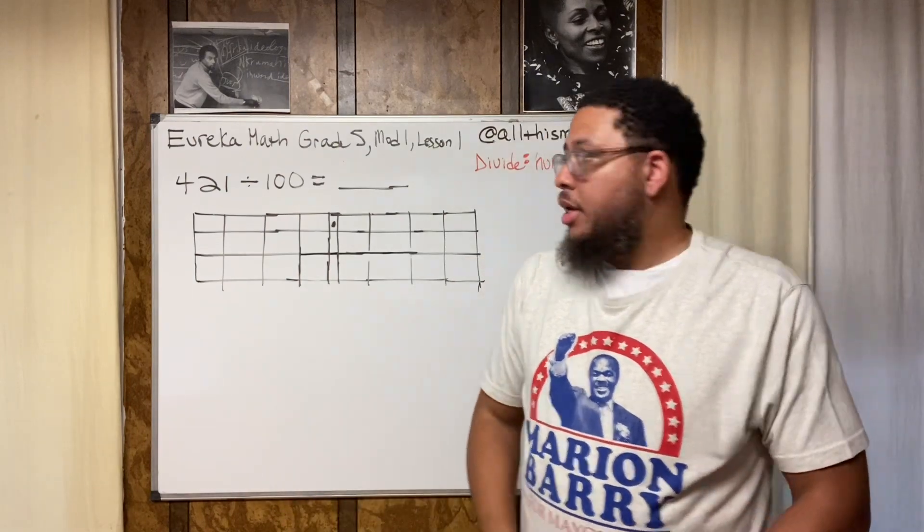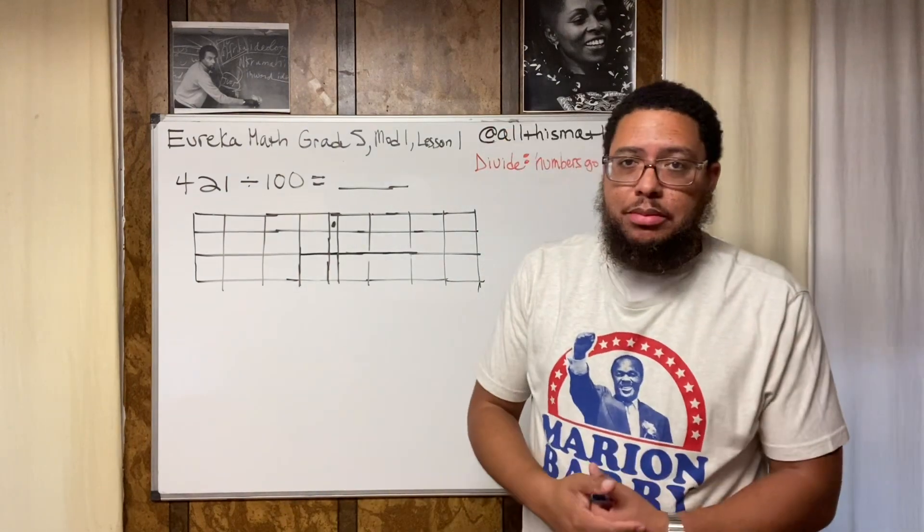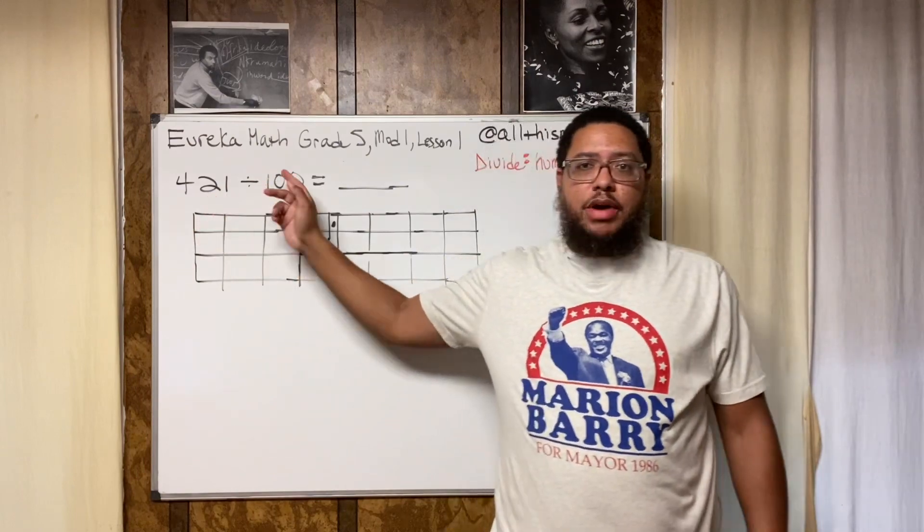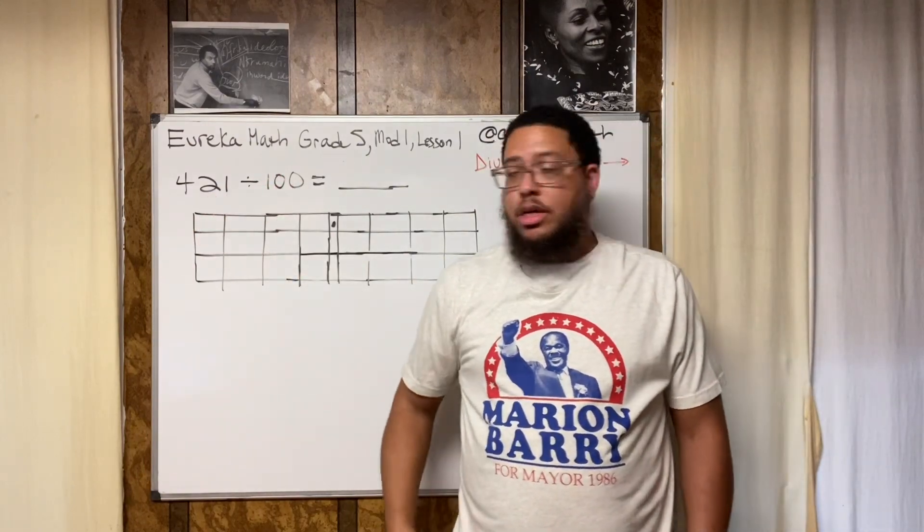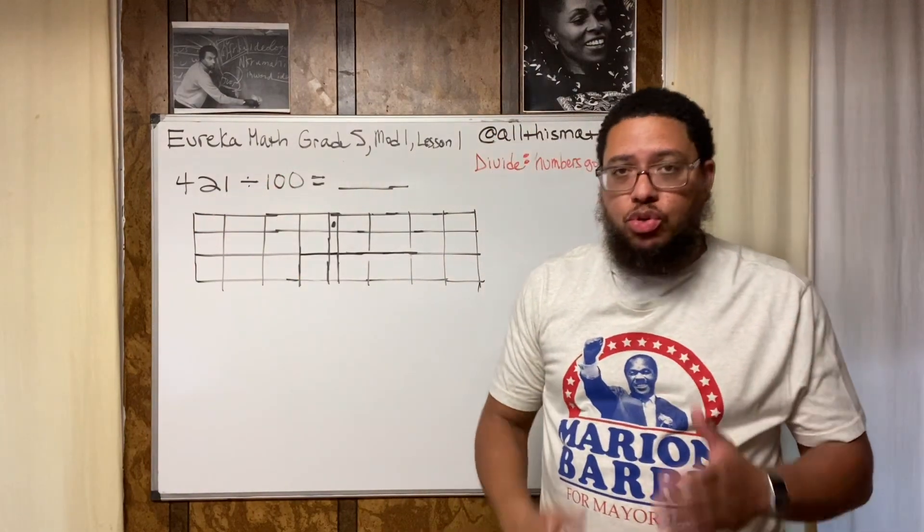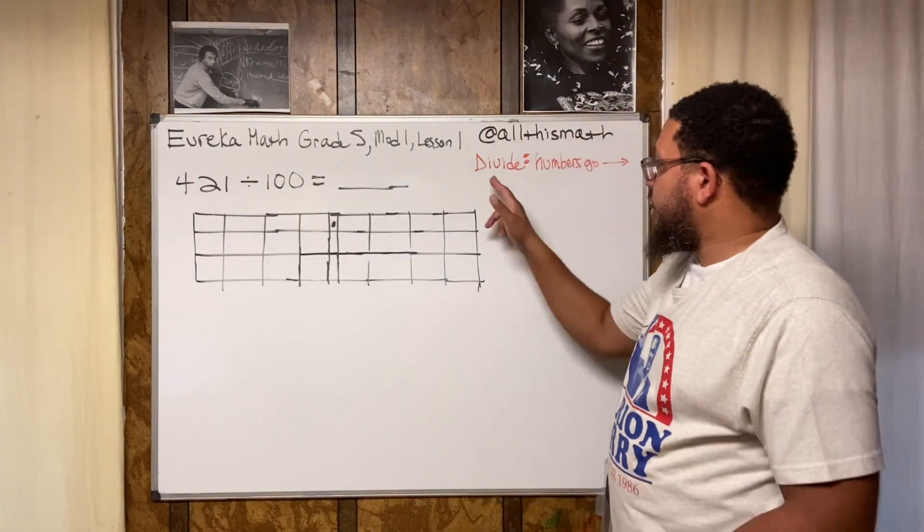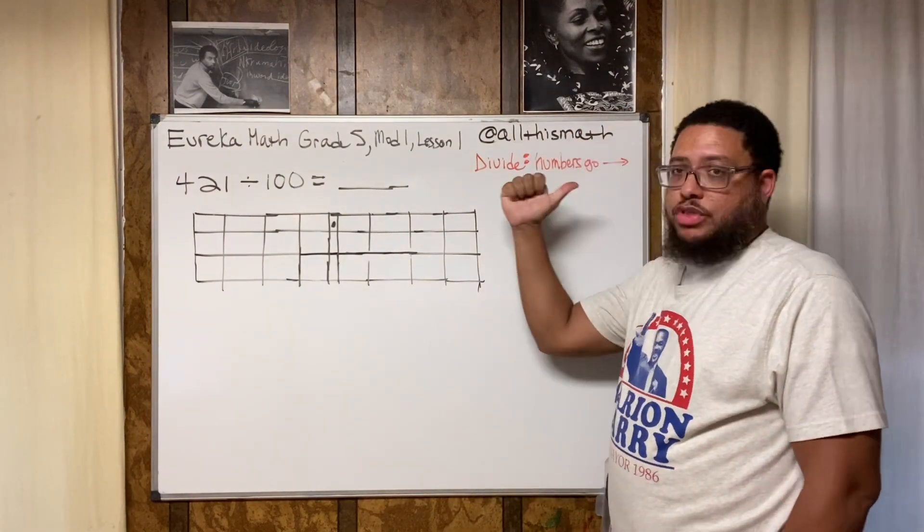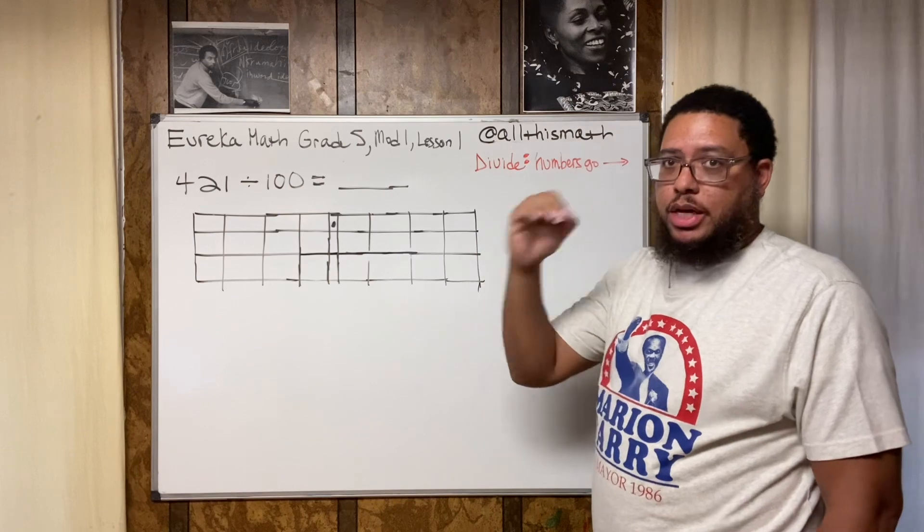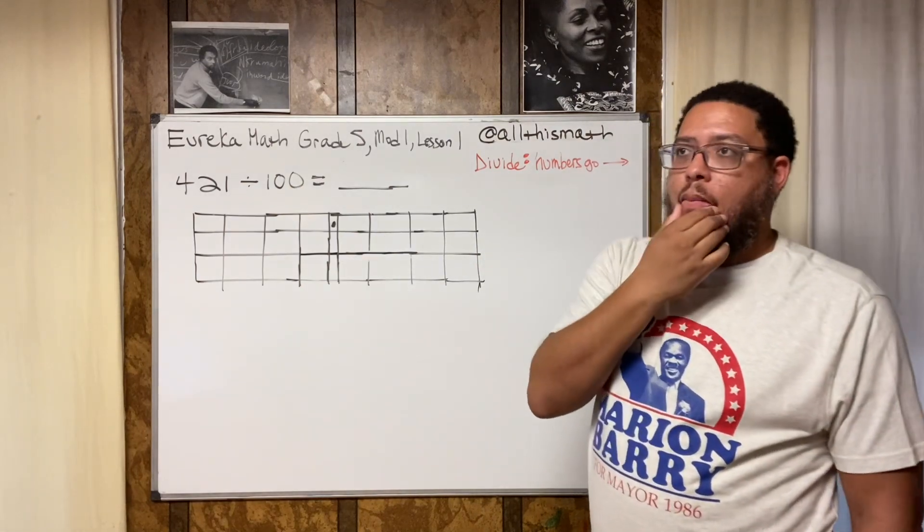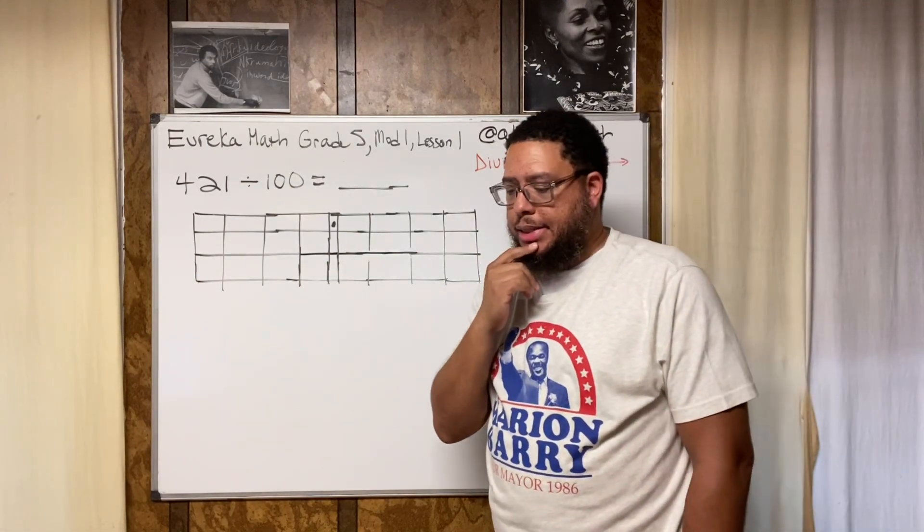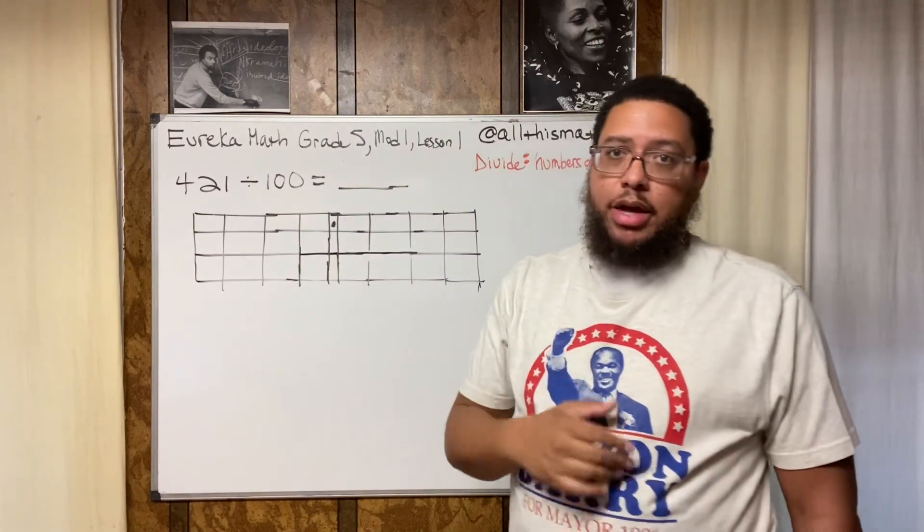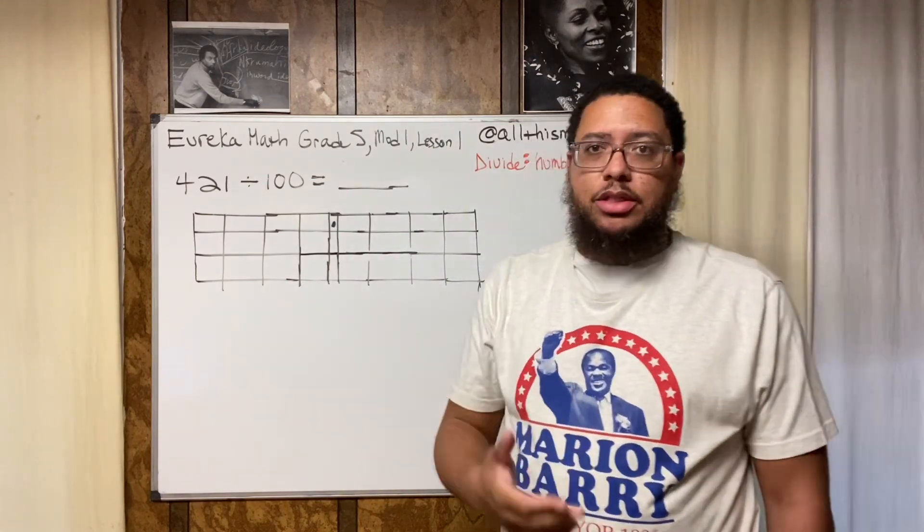This problem says 421 divided by 100. The rule is when we divide, the numbers move to the right, or the digits within the number slide to the right. The other thing we got to consider is how many spaces to the right.